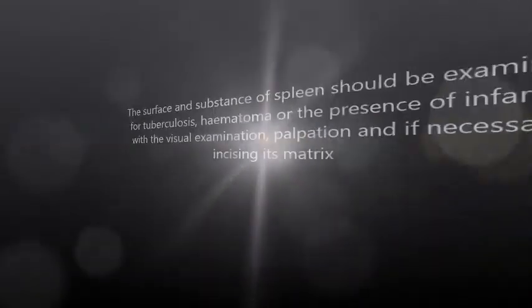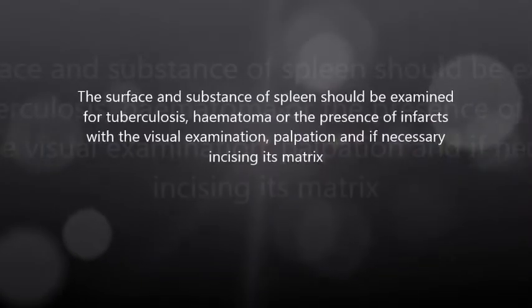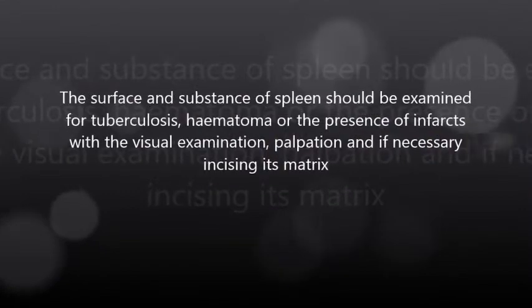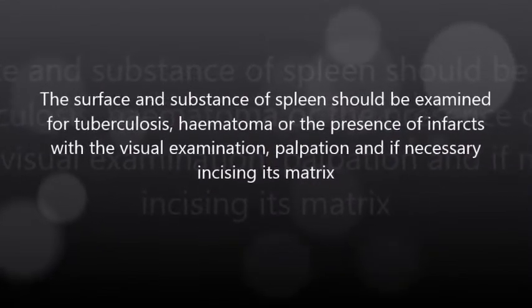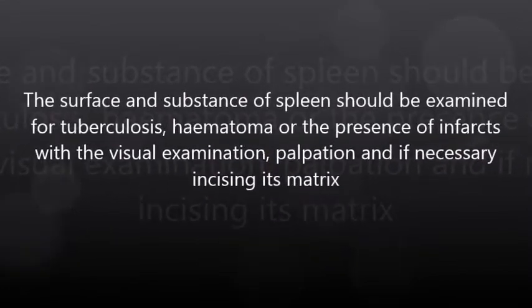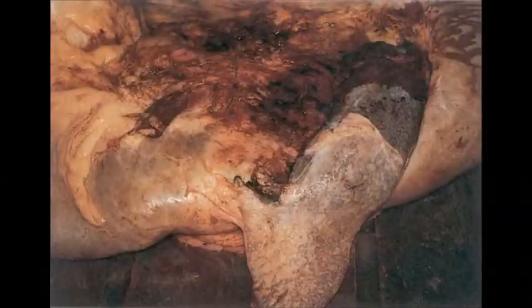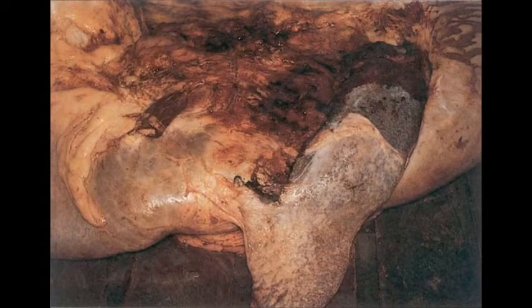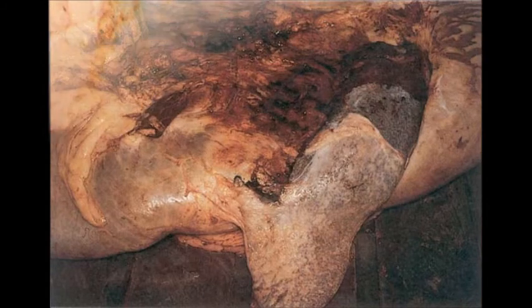Examination of the spleen: The surface and substance of the spleen should be examined for tuberculosis, hematoma, or the presence of infarcts through visual examination, palpation, and if necessary incising its matrix.